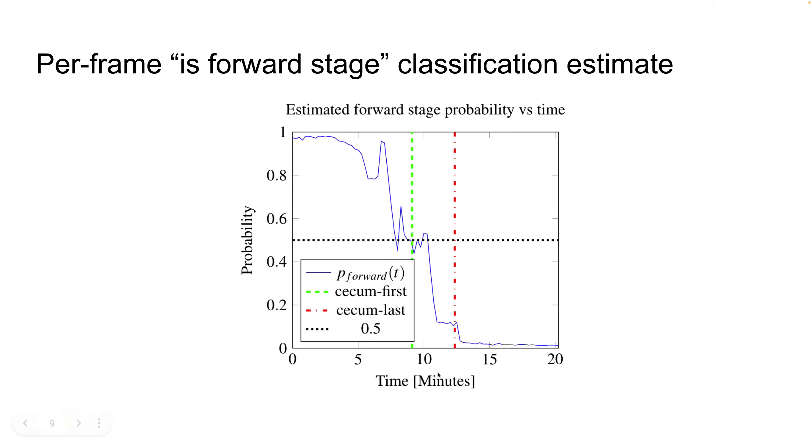So the label 1 would be if the frame is in the forward stage. In the x-axis we have the time in minutes. In the y-axis we have the estimated probability for a given frame. The blue curve is the predicted probability of being in the forward stage over time.